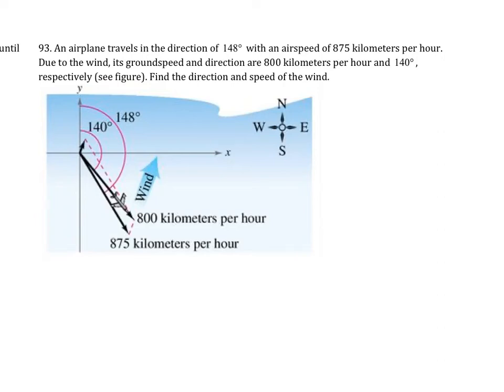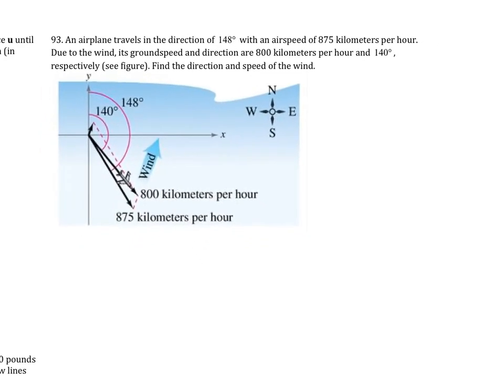So problem 93 on 6.3b has to do with airplane traveling and we're going to look at ground speed versus airspeed. An airplane travels in the direction of 148 degrees with an airspeed of 875 kilometers per hour. Due to the wind, its ground speed and direction are 800 kilometers per hour and 140 degrees respectively. That's the figure down here. Find the direction and speed of the wind.